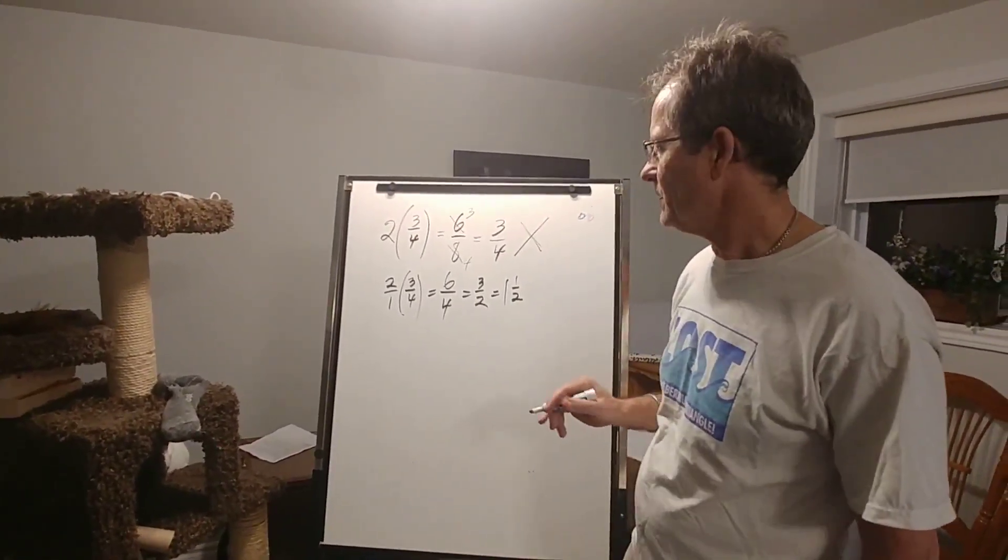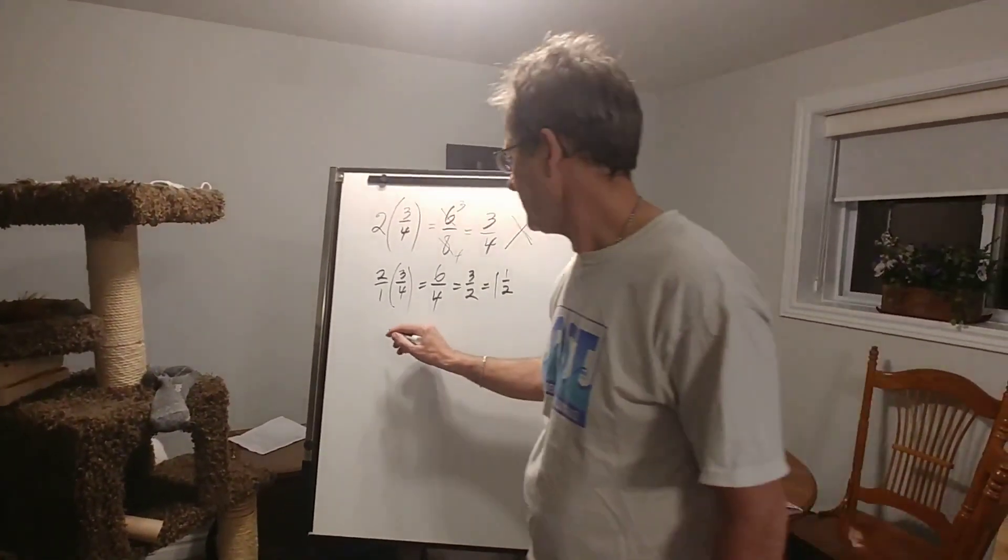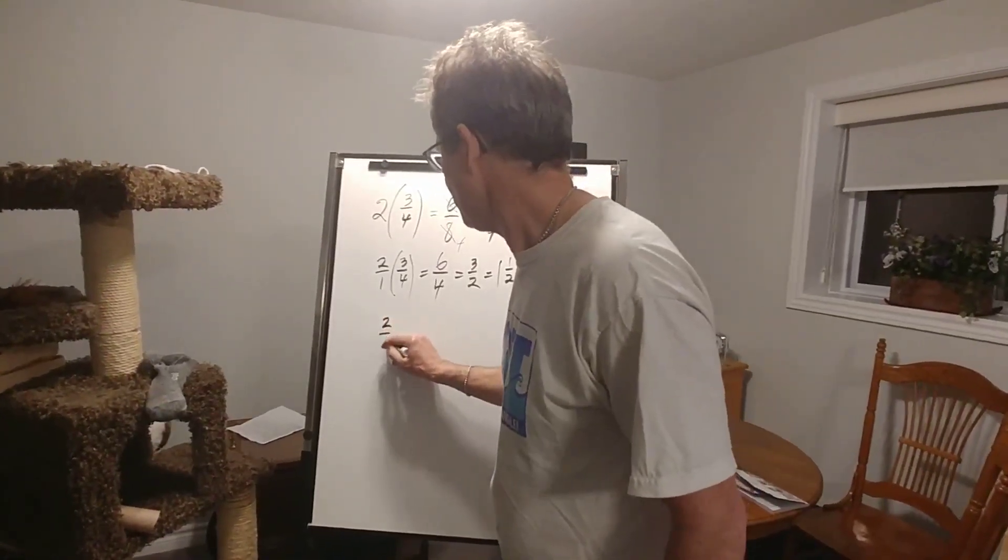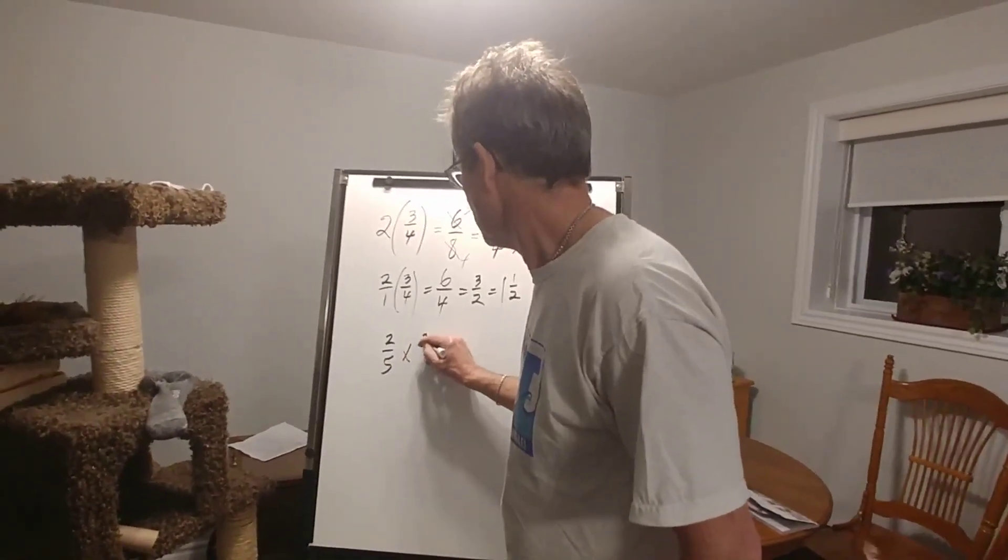That's the proper way to multiply fractions. Now let's take something a little bit more complicated. Let's say we have two fifths times three quarters.